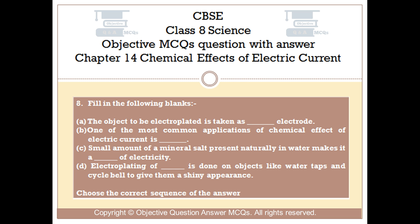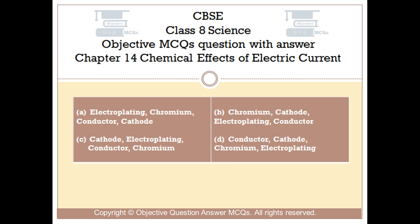Question number 8. Fill in the following blanks. Number 1: The object to be electroplated is taken as ___ electrode. Number 2: One of the most common applications of chemical effect of electric current is ___. Number 3: Small amount of a mineral salt present naturally in water makes it a ___ of electricity. Number 4: Electroplating of ___ is done on objects like water taps and cycle bells to give them a shiny appearance. Number 5 — choose the correct sequence of the answer. Option A: Electroplating, Chromium, Conductor, Cathode.